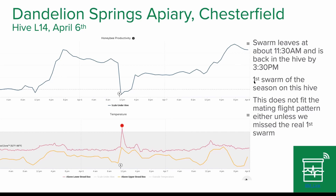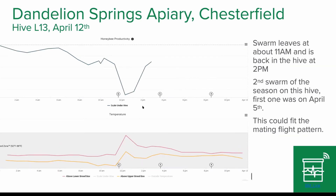Maybe they left and didn't take the queen with them — you don't know. Over time you'll be able to explain what goes on. There is another one — again, a weight drop and weight comes back, that was on April 12th. The reason I don't have the weight data continuing is because I had to strap the hive down here because a storm was coming in and I didn't want the hive to fall over. But again, we think that was a mating flight — this was a second swarm of the season, so it could have been exactly that.